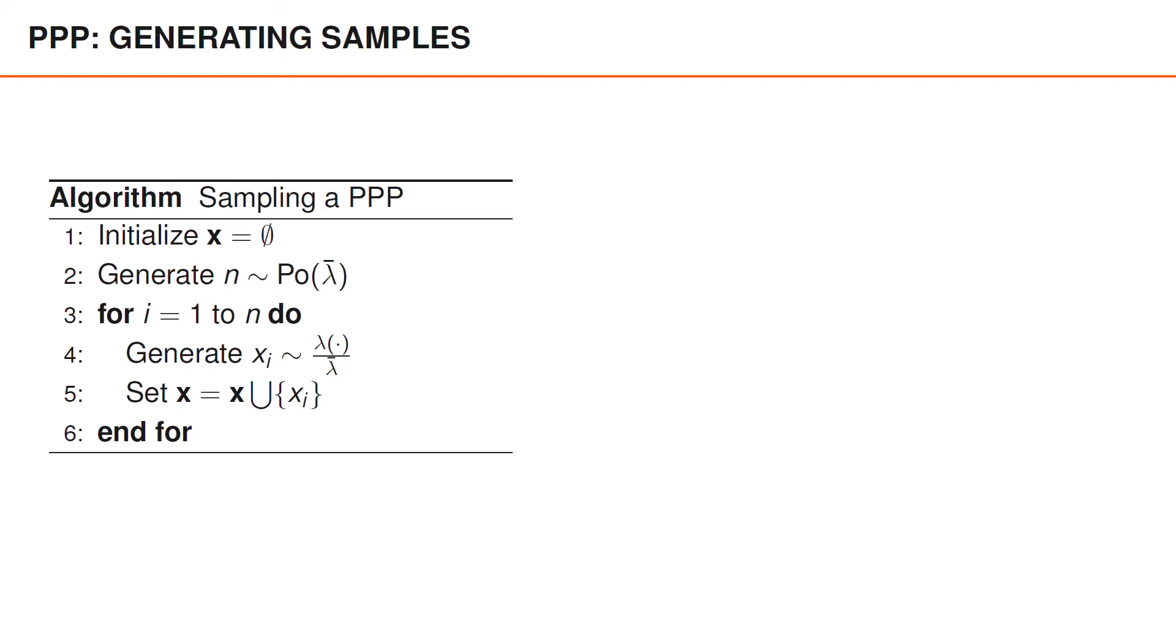First we initialize the set as empty, and we then determine the number of elements in the set by generating a sample n from a Poisson distribution with mean lambda bar. Finally, we can generate n samples from the spatial pdf of the Poisson point process and then store these samples in the set x using the union operator.